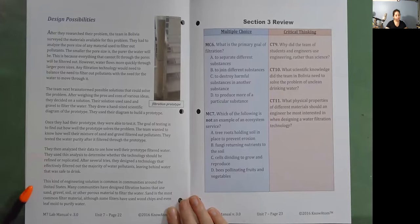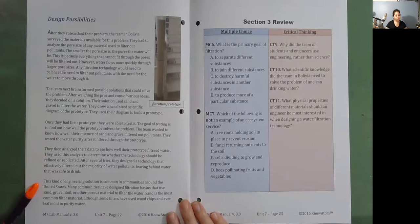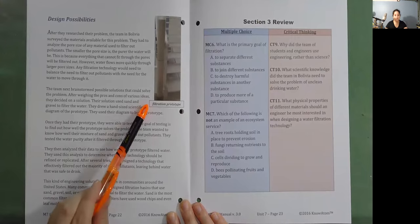This kind of engineering solution is common in communities around the United States. Many communities have designed filtration basins that use sand, gravel, soil, or other porous materials to filter the water. Sand is the most common filter material, although some filters have used wood chips and even leaf mold to purify water. This is a filtration prototype.